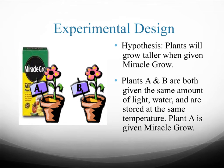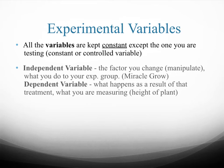When you do an experiment, you only want to change one thing at a time. If you change multiple things and observe an effect, you won't know which change caused it. But if you change only one thing and get a result, then you know it's likely the result of what you changed. We label this: an independent variable is the one thing you change in your experiment, and then you observe what results from that change.